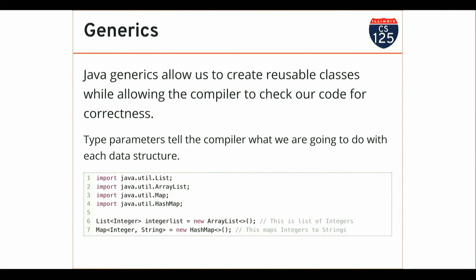Instead, you should tell the compiler what you're going to put in the list. This declaration tells the compiler I'm creating a list of integers — I put my type in angle brackets following the type declaration. I'm declaring a map that maps from integers to strings. The compiler can now check to make sure the key is an integer and the value is a String. When I get something out, the compiler can check and make sure the value is a String.